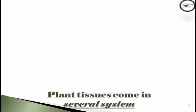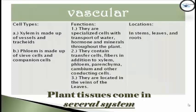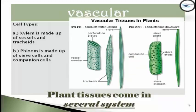Plant tissues come in several systems. The first system is the vascular system. It has two cell types. The first is xylem, which is made up of vessels and tracheids. And the second is phloem, which is made up of sieve cells and companion cells. As you can see in the picture, this is the xylem, which conducts water upward, and this is the phloem, which conducts food downward.